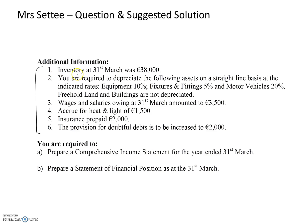We will now look at the adjustments. The closing inventory at the 31st of March, the end of the year, will appear in the trading account and will also reappear in the statement of financial position. It's worth reminding you that every single adjustment you make has to appear twice — in the income statement and in the statement of financial position.